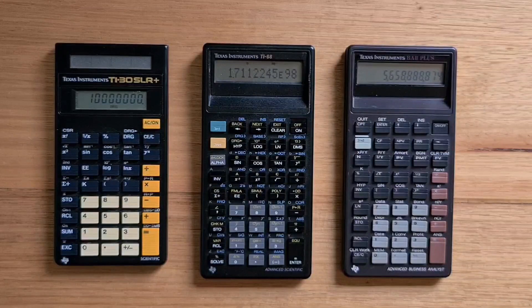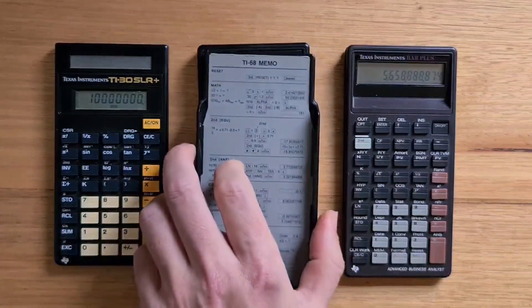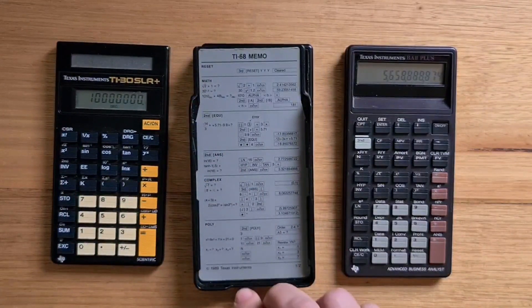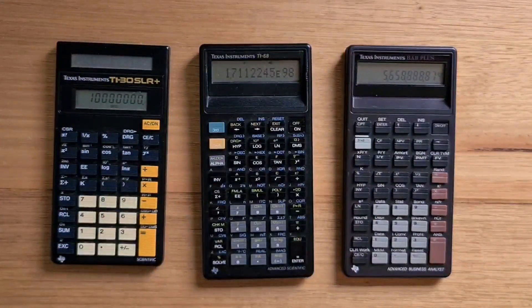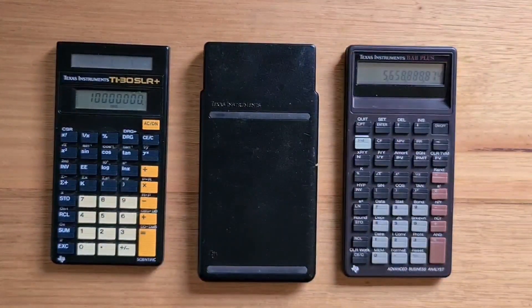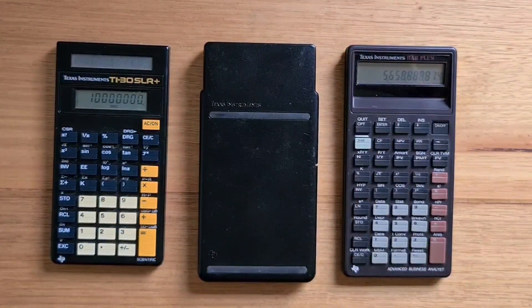The 68 comes with a protective cover that includes a reference card that slides into the groove on the calculator. Even with the cover on, the calculator is still quite pocketable.